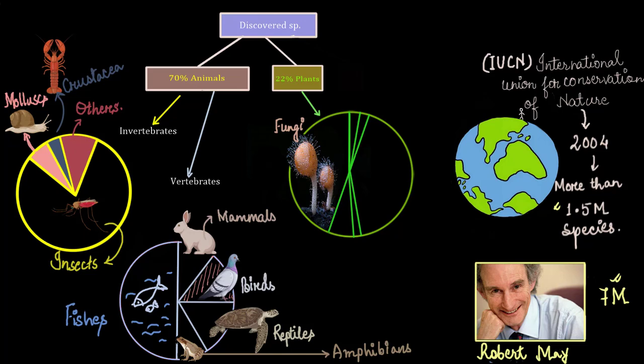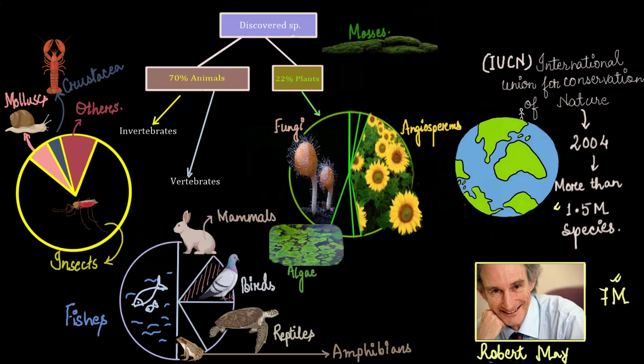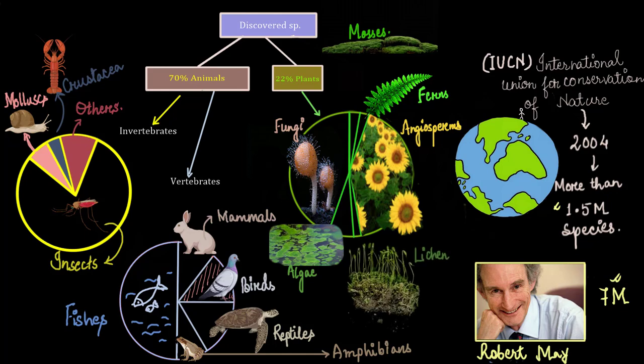After fungi, the highest percentage is of angiosperms, that is the flowering plants. And after angiosperms, we have the algae. Right after algae, the highest percentage on the pie chart is occupied by mosses and ferns and its allies. And last, a very small portion on the pie chart is occupied by lichen.